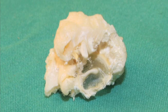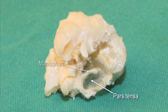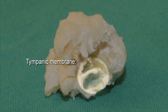This is a lateral view from inside the middle ear cavity looking out. The pars tensa and the manubrium of the malleus can be clearly seen along with the conical shape of the tympanic membrane.